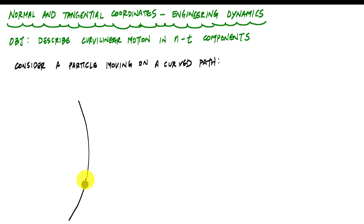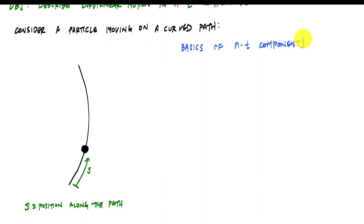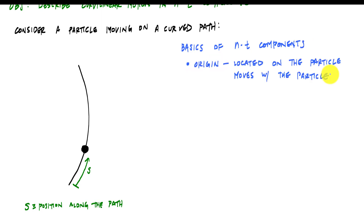This particle — the black dot — is moving on this path here. We'll say it started from here, and the position along the path is S. Whenever we deal with any sort of coordinate system, we want to think about where the origin is. A special thing about normal-tangential components is that the origin is actually on the particle itself and moves with it. There is no fixed reference, unlike an XYZ or polar coordinate system. The origin is on the particle itself.